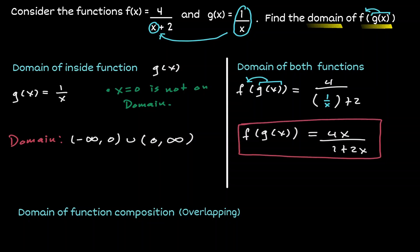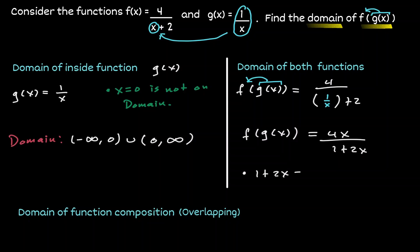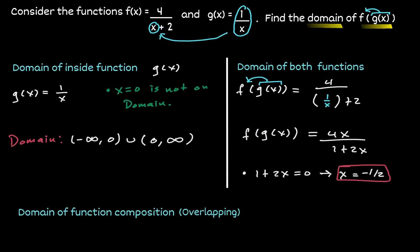Now that we have found the result of the composition, let's find the domain of this new function. We look at the denominator since we have a fraction — the denominator can never be 0. Let's set 1 plus 2x equal to 0, subtract 1 from both sides, then divide by 2. The only value that makes the denominator 0 is negative 1/2, so the domain is all x values except negative 1/2: from negative infinity to negative 1/2, union negative 1/2 to positive infinity.